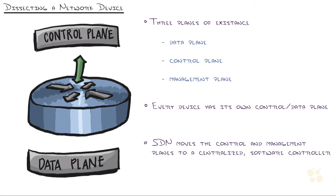So here's the premise of how SDN works. Every network device has three planes of existence: the data plane, control plane, and management plane.